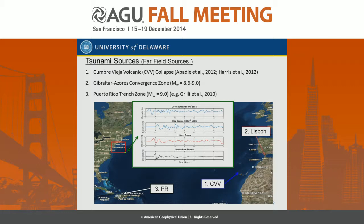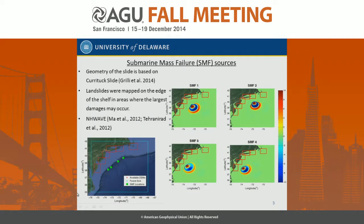The gauge values for all of these sources are shown as green dots in this slide. The red box shows the boundaries where we recorded data from low-resolution data in the ocean to perform nearshore high-resolution analysis. We also had some near-field sources — landslides. We used the historic Currituck event geometry and mapped it over the edge of the shelf in areas that will cause the largest damage.